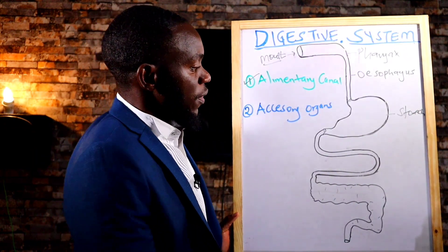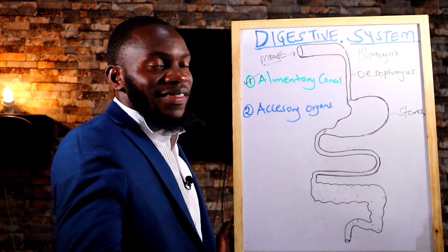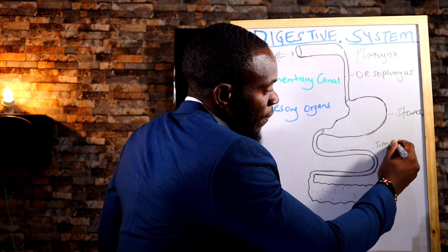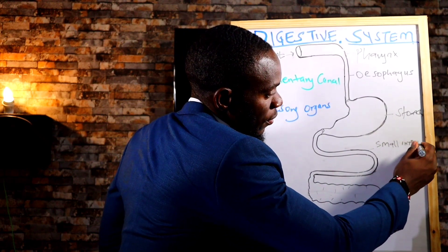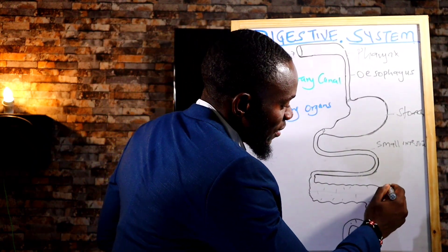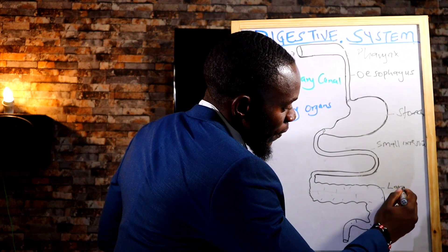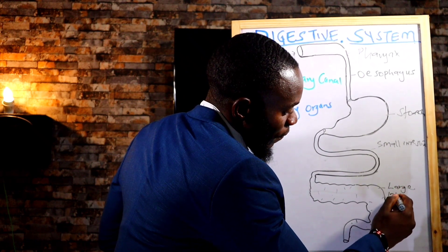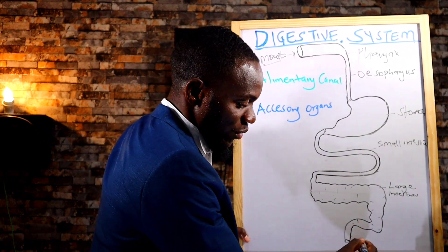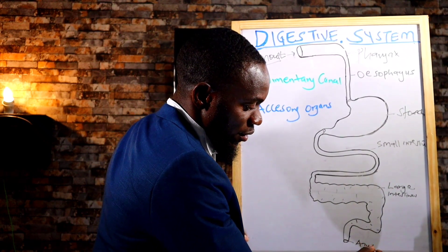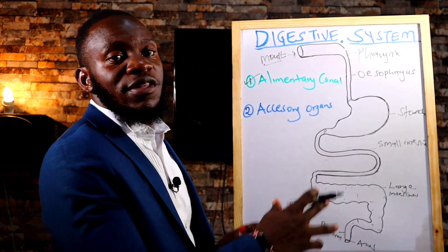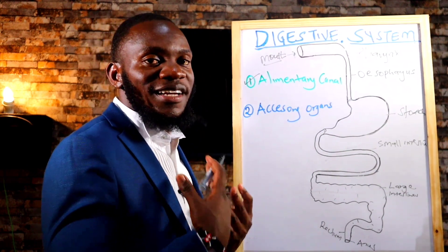So we have the cardiac sphincter and the pyloric sphincter. Then we have the small intestines, followed by the large intestines, and the end of it all is the anus. Remember, before the anus we have the rectum. So basically, those are the parts of the alimentary canal.